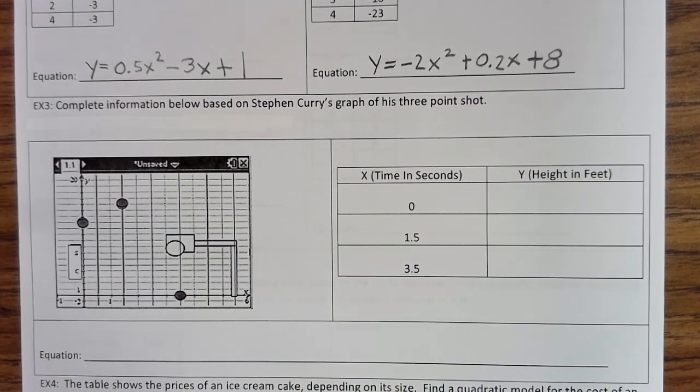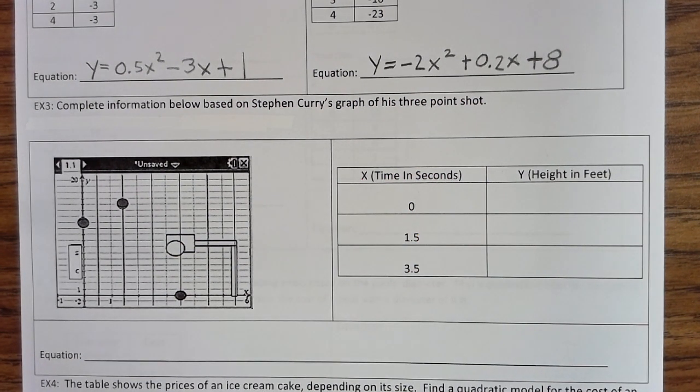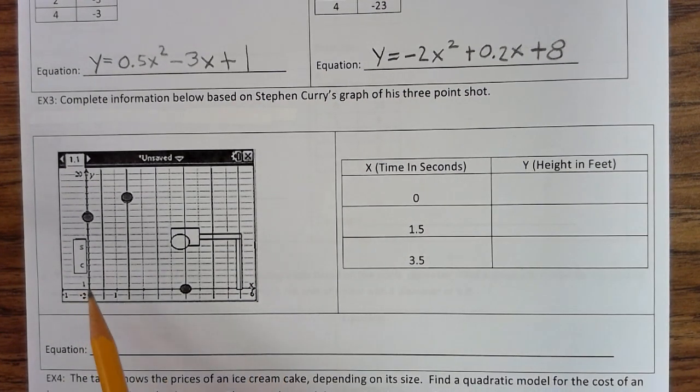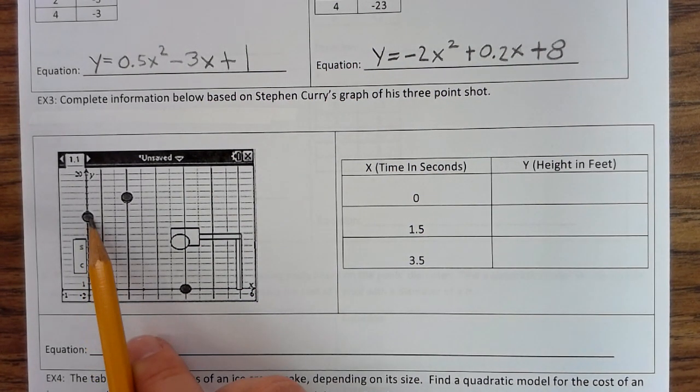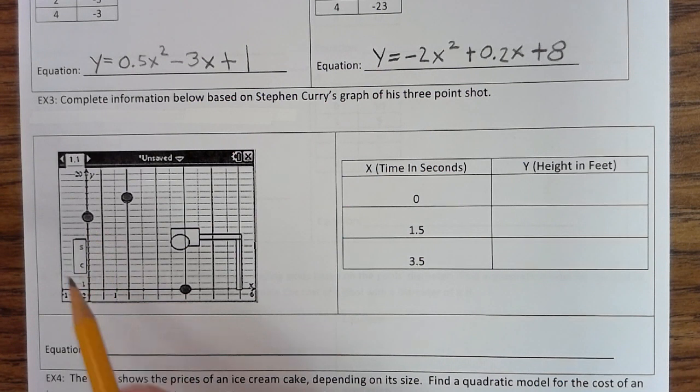Complete information below based on Stephen Curry's graph of the three-point shot. Okay, so you can see here that this is F. Curry. Now, the ball before it was released at 0 seconds was, these are in feet, so 1, 2, 3, 4, 5, 6, 7.